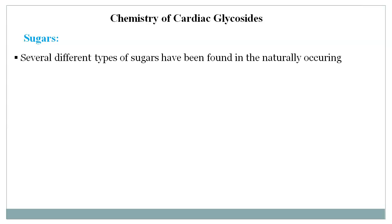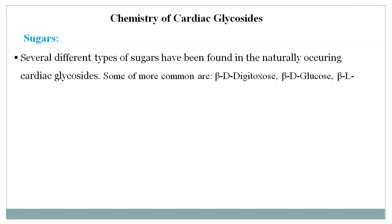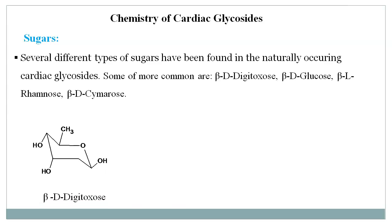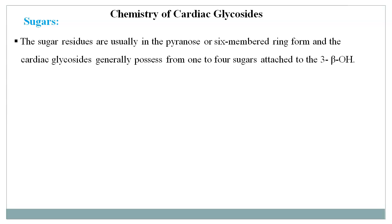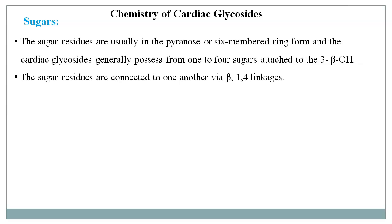Several different types of sugars have been found in naturally occurring cardiac glycosides. Some of the more common are beta-D-digitoxose, beta-D-glucose, beta-L-rhamnose, and beta-D-cymarose. Here are the structures of all these representative sugars which are mostly present in cardiac glycosides. The sugar residues are usually in the pyranose or 6-membered ring form, and cardiac glycosides generally possess from 1 to 4 sugars attached to the 3-beta hydroxyl group, as seen in lanatoside C.